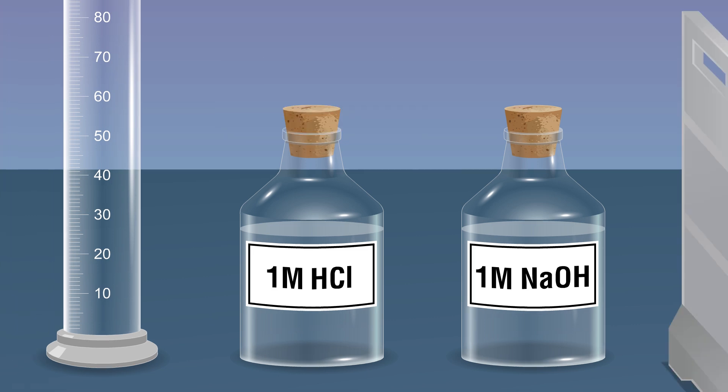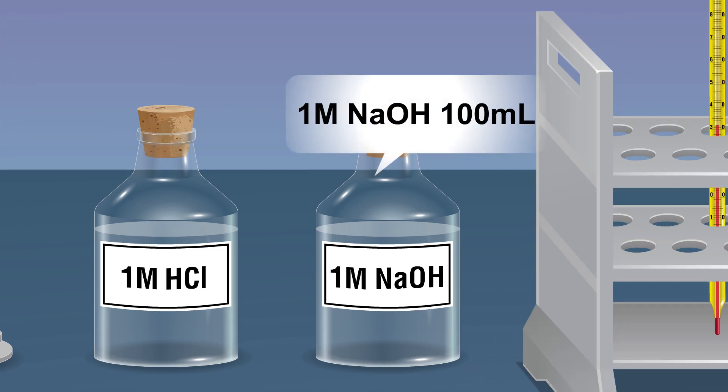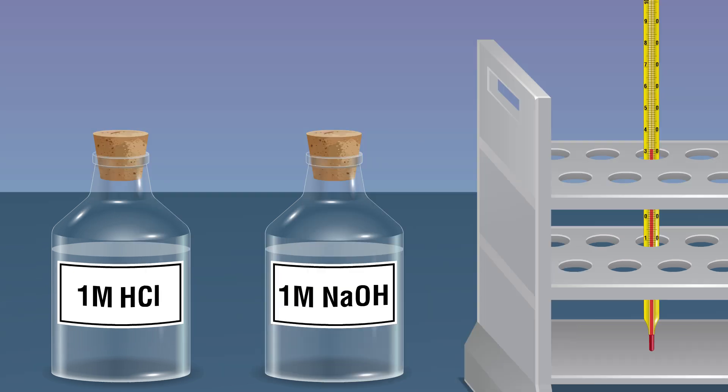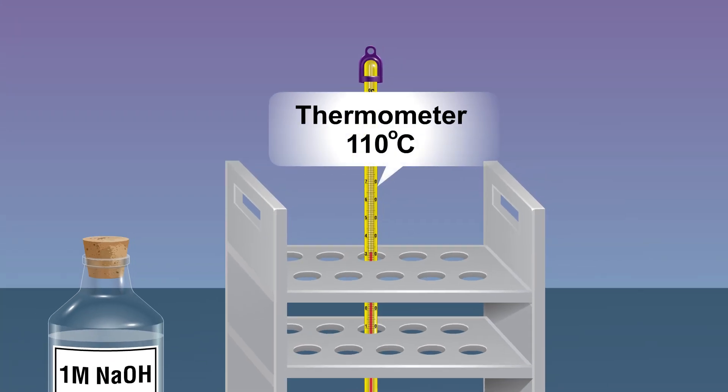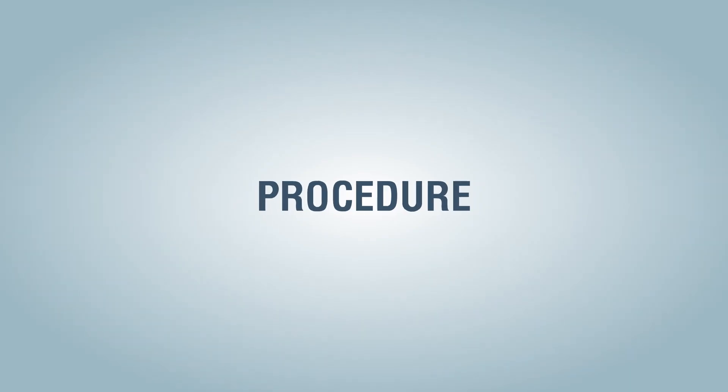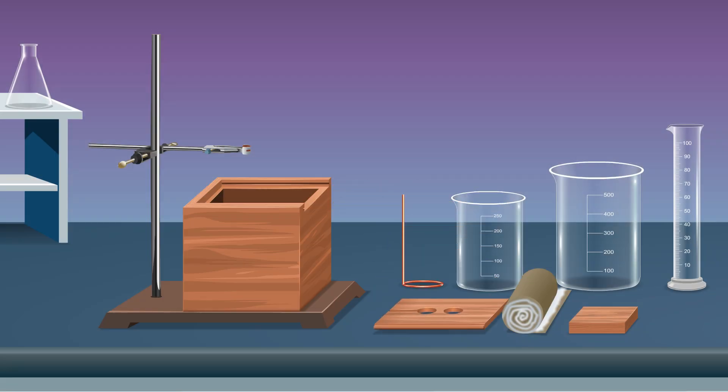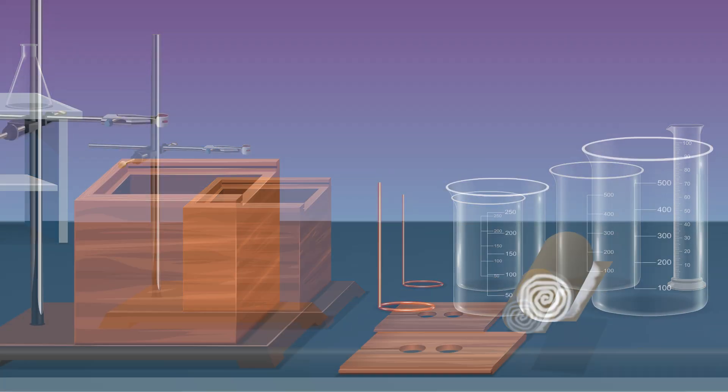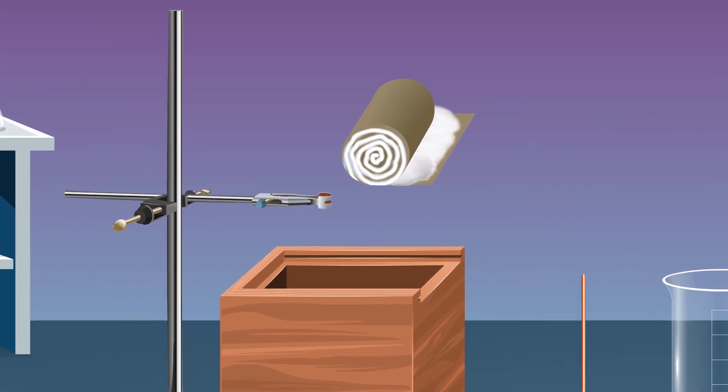Procedure: Make a setup of a calorimeter. Take an expanded wooden box and fill it with cotton wool.